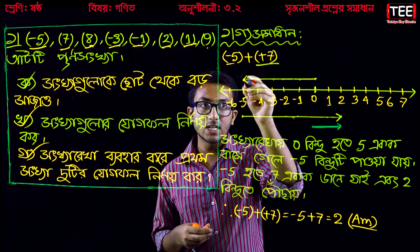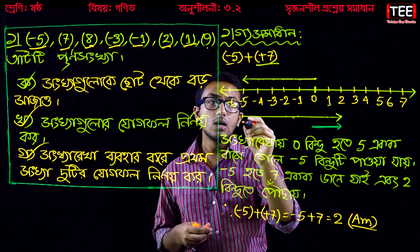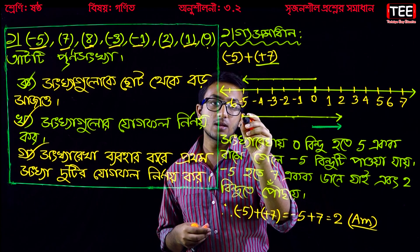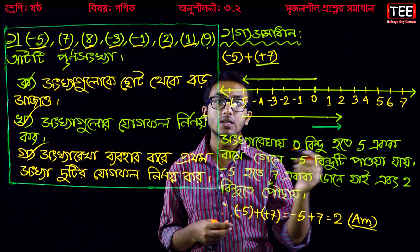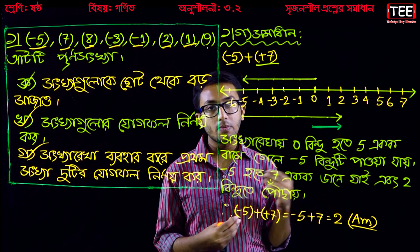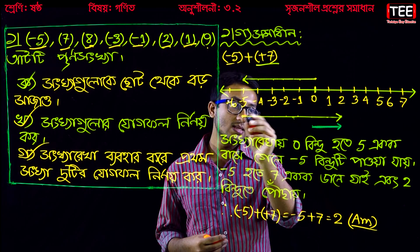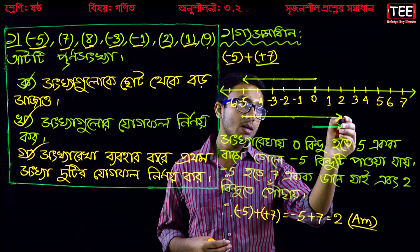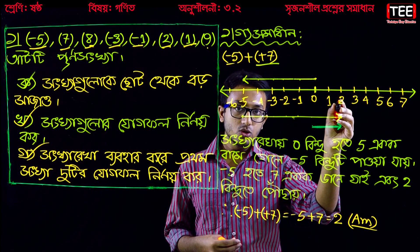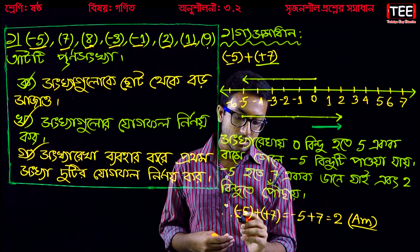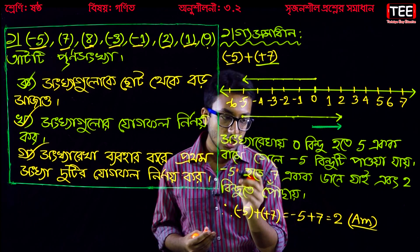So we get a plus minus 5. If we get a plus, plus 7, then we get a plus minus 5. If we get a plus minus 5, then we get a plus plus 2. So plus 2 is the last thing, and the answer is plus 2.